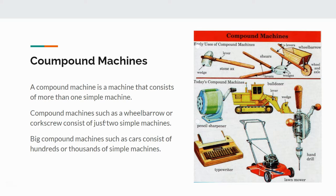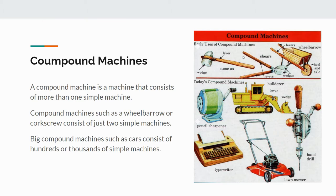All sorts of compound machines can be broken down into simpler machines. Some are really simple with just two simple machines, like this stone axe, whereas something like a car or a lawnmower has many, many simple machines put together — gears, axles, wheels, levers, pulleys, and even wedges in the blades. So all sorts of simple machines exist within those compound machines.